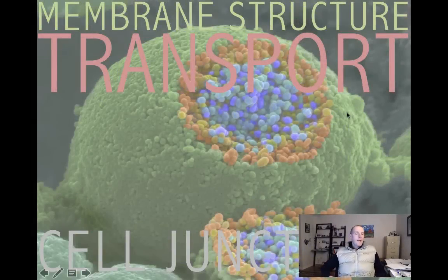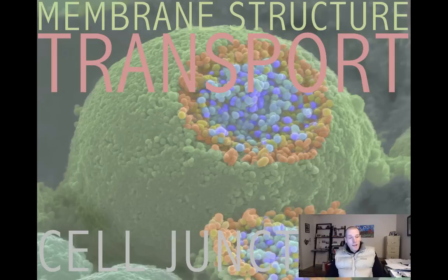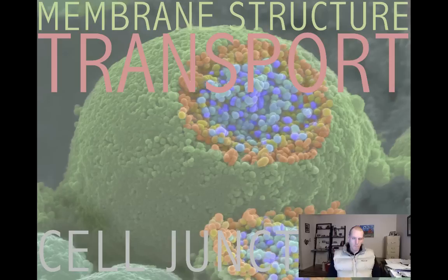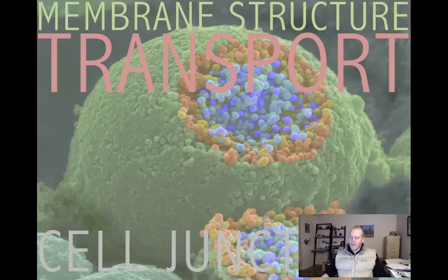Welcome back folks. Here we are again in my office. You can see I've had a bit of a haircut so my head will probably get cold — I have to put a hat on in a little bit probably. Let's move on to our next module. The next thing we're going to talk about is membrane structure, transport of solutes and other materials across the membrane, and then at the end we'll look a little bit at cell junctions. We've got a lot to get through so let's get started.